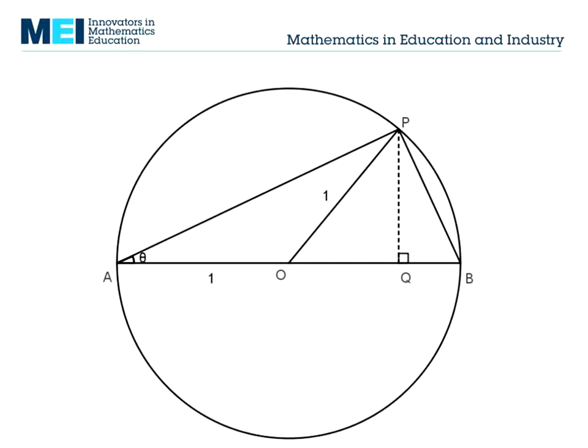Using the circle theorems, you know the angle POQ is 2 theta. And so you know PQ is sine 2 theta. But if you ignore the 2 theta, the angle POQ, and try to find PQ in another way, you'll get one of the double angle formulae. And similarly for OQ, you get double angle formulae for cos 2 theta.